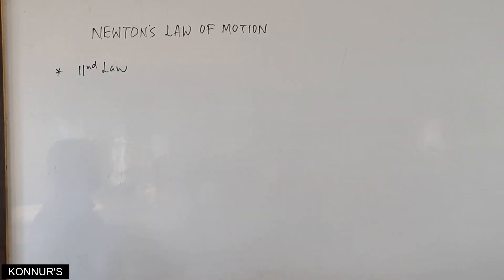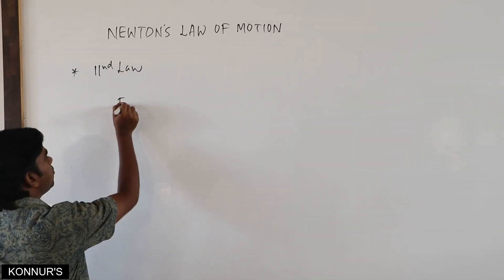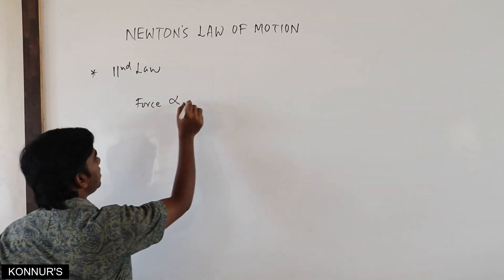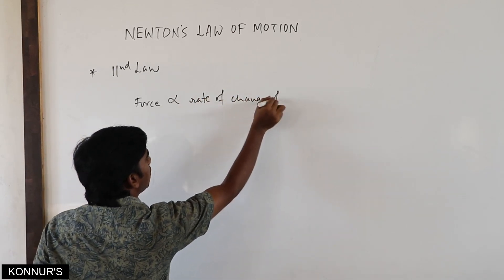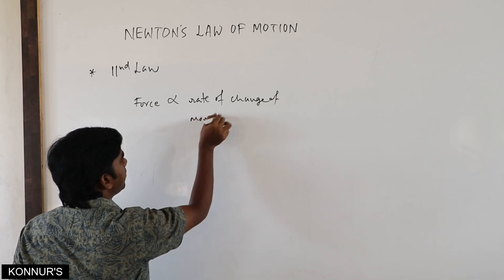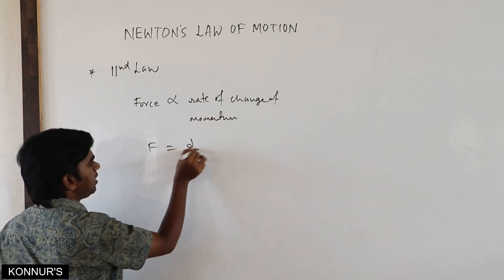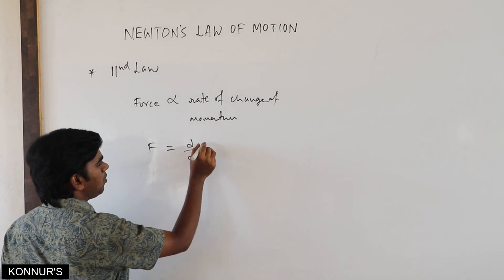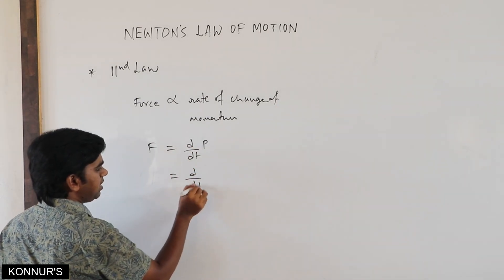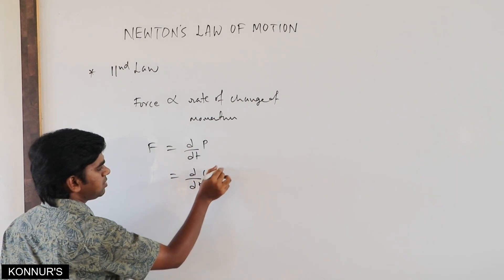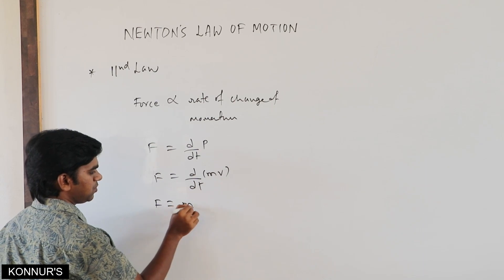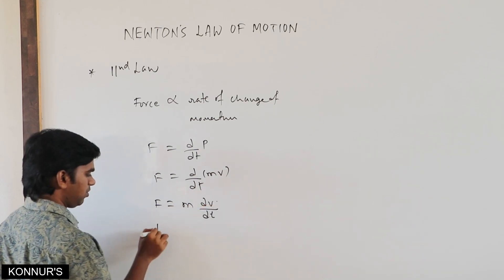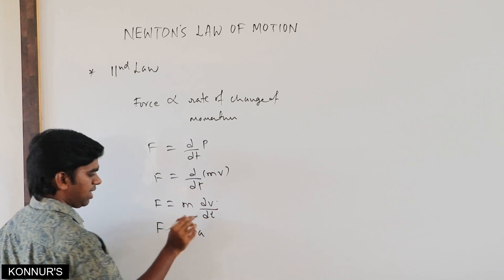The second law gives the actual definition of force. According to this law, the force acting on a body is directly proportional to the rate of change of its momentum. So force equals d/dt of momentum p. Since p equals mass times velocity, force equals m times dv/dt, which is mass times acceleration.